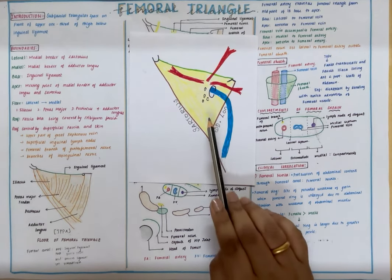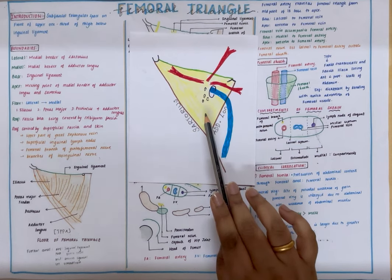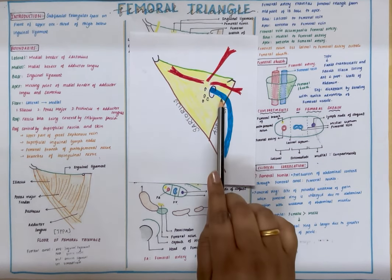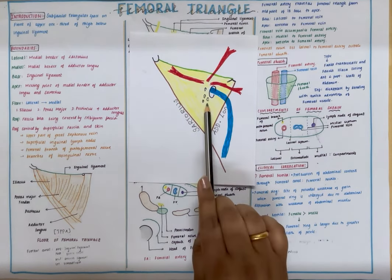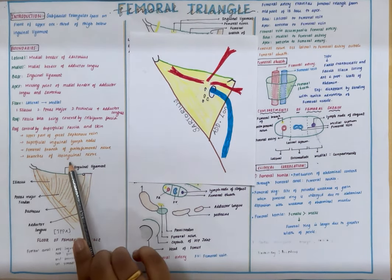The fascia lata is in turn covered by skin and superficial fascia. The superficial fascia of the femoral triangle contains the upper part of the great saphenous vein, the superficial group of inguinal lymph nodes, femoral branch of genitofemoral nerve, and the ilioinguinal nerve branches.